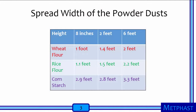Now, compare the widths of the spread of the three powders. We see here that corn starch shows the greatest spread, followed by rice flour and then wheat flour. This is because corn starch powder has the smallest particles, whereas wheat flour generally has the largest particles.